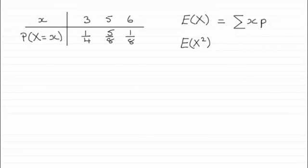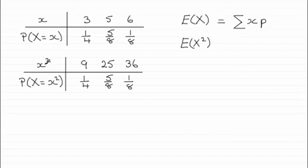If we were to construct a table for X squared, it would look something like this: we would have 3 squared which is 9, 5 squared is 25, and 6 squared is 36. We would still keep the same probabilities.